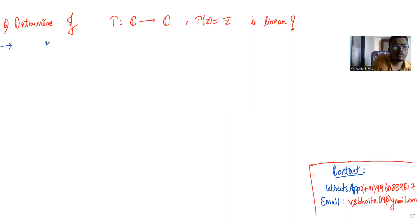If z equals a plus ib, then z bar is a minus ib, the conjugate of z. Now let's check if T is linear.